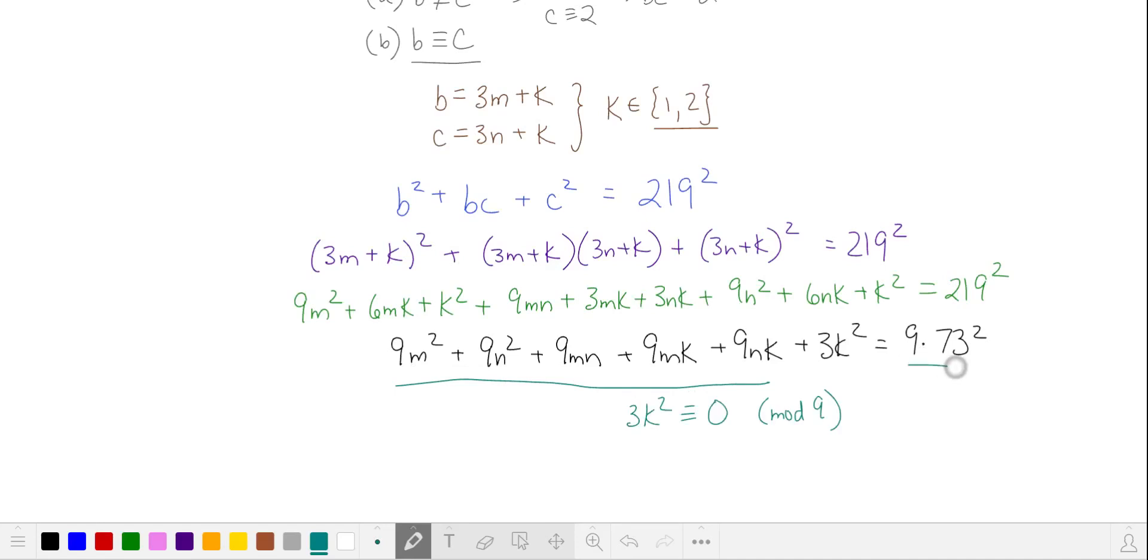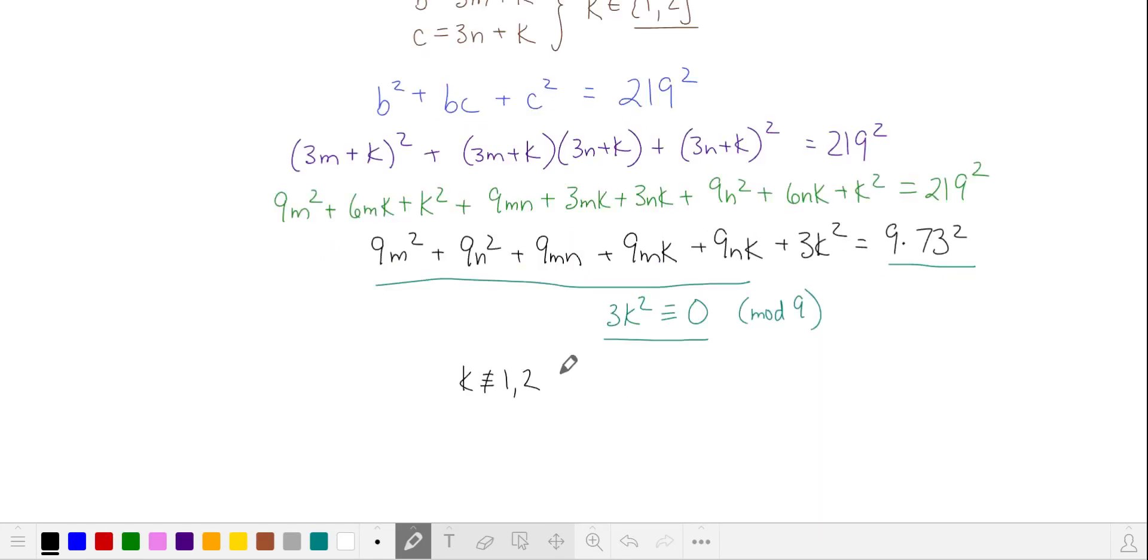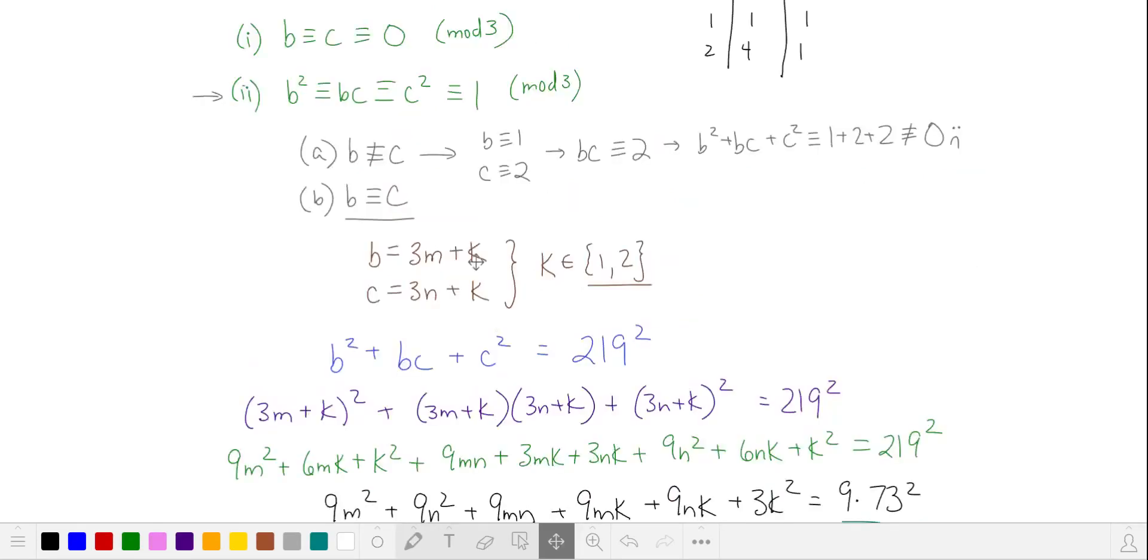In mod 9, all of these terms disappear, and since the right hand side is a multiple of 9, that means 3k² has to be a multiple of 9. This doesn't work if k is equal to 1 or 2 in mod 3, which means k has to be equal to 0, and b and c are multiples of 3.